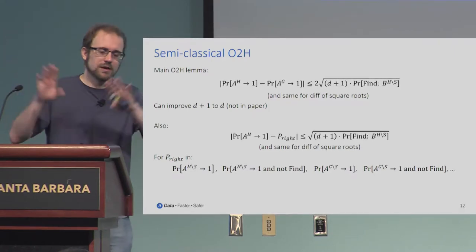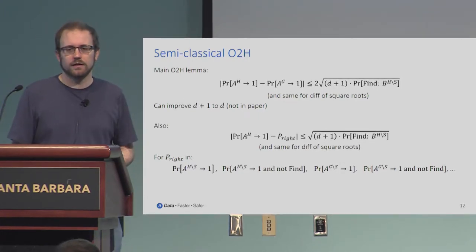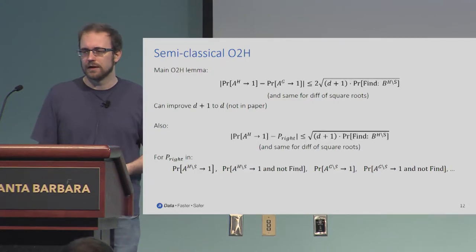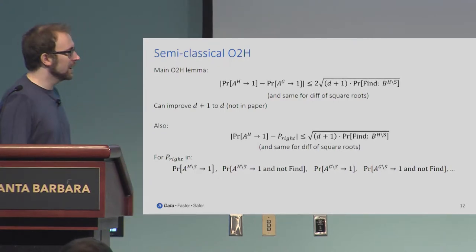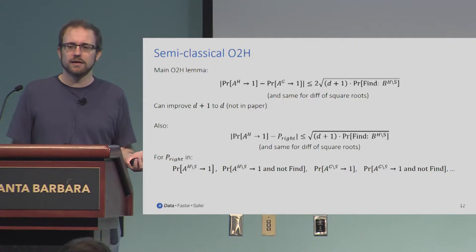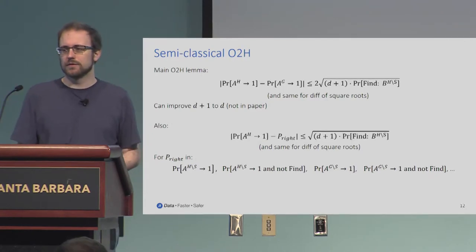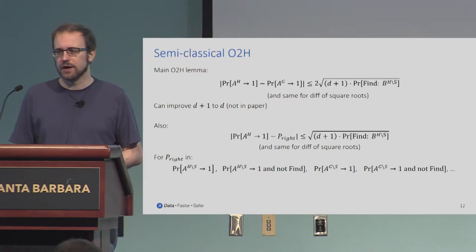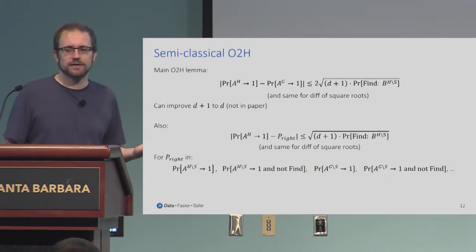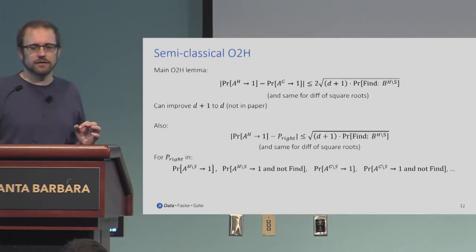Up-leveling from the equations: what this is saying is that measuring whether the adversary's queries are in this set will disturb the adversary's state — that's unavoidable, that's the observer effect in quantum mechanics. But it only disturbs the adversary's state by an amount proportional to the square root of the chance that he was actually querying an element of this set, and therefore proportional to the square root of the chance that you got the answer you were looking for. If the adversary is not very good at finding elements of this set and querying them, then measuring whether the queries are in the set doesn't change things very much.